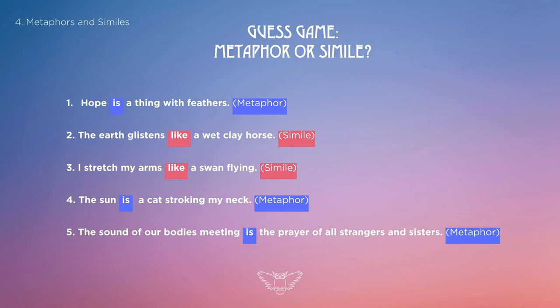Number one: 'Hope is a thing with feathers' is a metaphor. Two: 'The earth glistens like a wet clay horse' is a simile. Three: 'I stretch my arms like a swan flying' is another simile. Four: 'The sun is a cat stroking my neck' is a metaphor. And lastly: 'The sound of our bodies meeting is the prayer of all strangers and sisters' is also a metaphor.